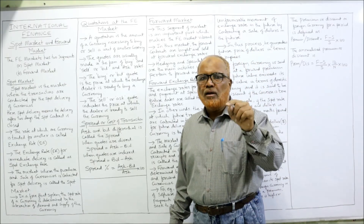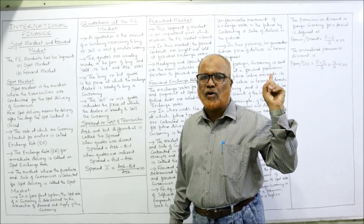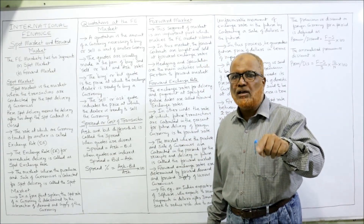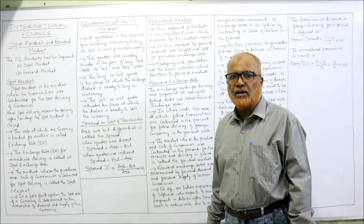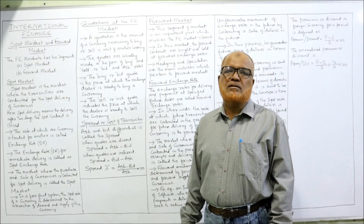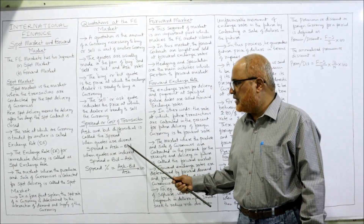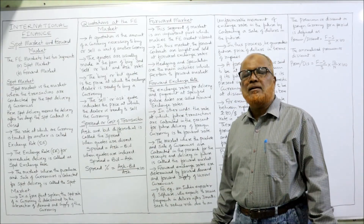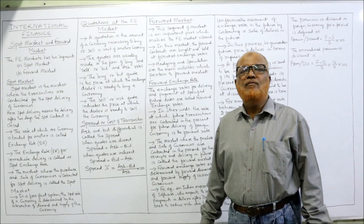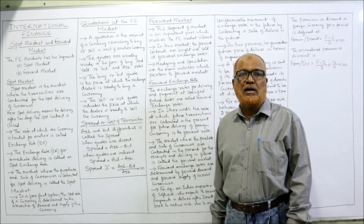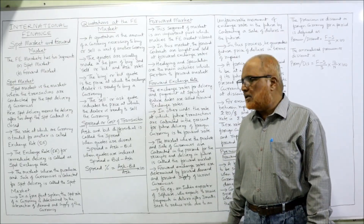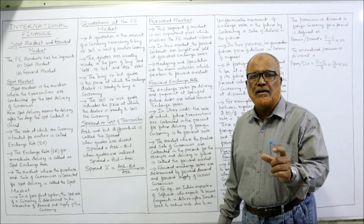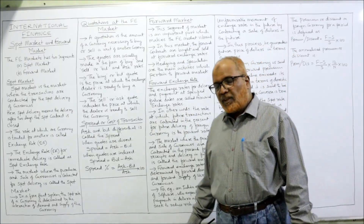There are two types of quotations: direct quotation and indirect quotation. Direct quotation is the number of units of home currency for one unit of foreign currency. Indirect quotation is the number of units of foreign currency for one unit of home currency. If the quotation is direct, spread equals ask minus bid. If indirect, spread equals bid minus ask. The percentage spread formula is: (ask minus bid) divided by ask, multiplied by 100.